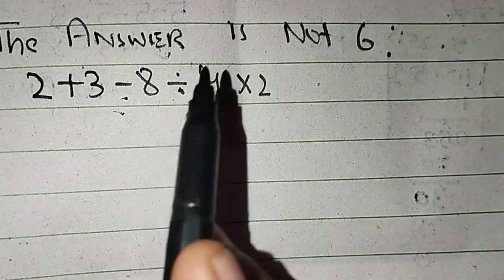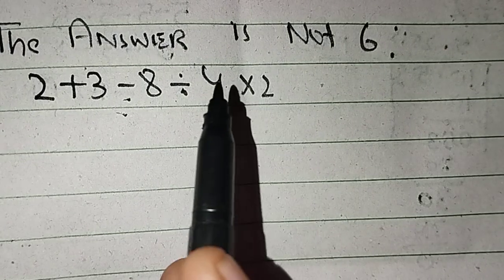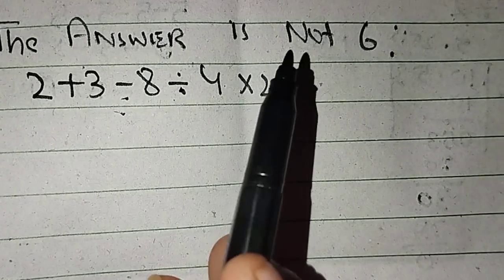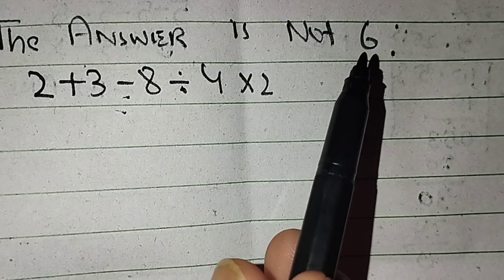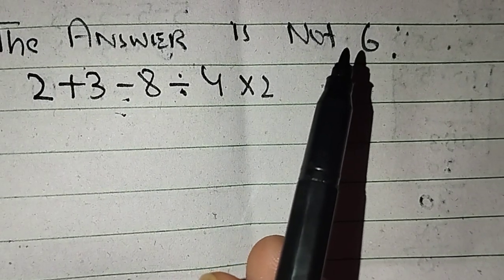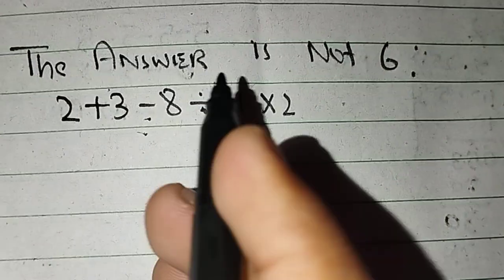If we do not use the order of operation, then we will get answer six, and answer six is not the right option. So we use the order of operations to find the best answer and right answer.